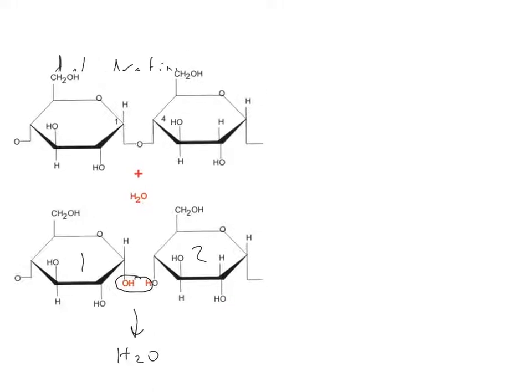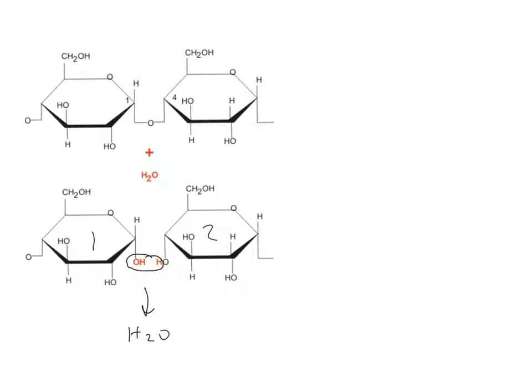This is the new linkage. This bond right here is called the glycosidic bond that links two sugars together, and it was formed by a dehydration reaction.